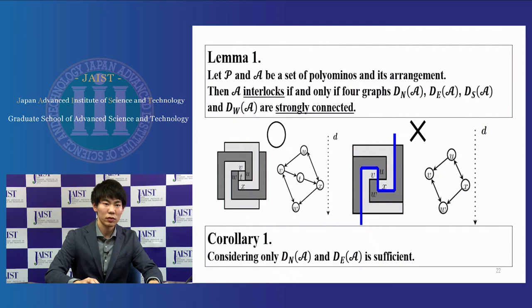Lemma 1. Let P and A be a set of polyominoes and its arrangement. Then, A interlocks if and only if four graphs DNA, DEA, DSA and DWA are strongly connected.